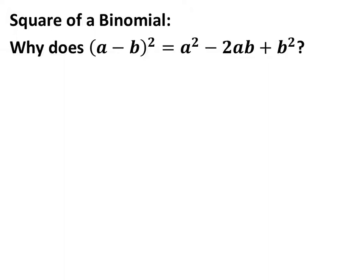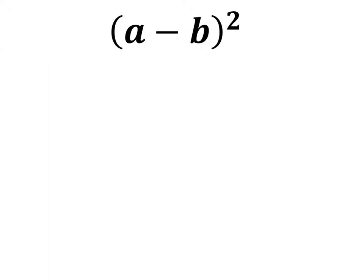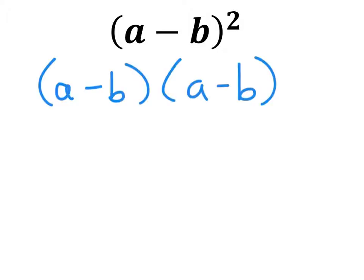Everything's going to work pretty much the same way, but instead of a plus we've got a minus right here. So let's take a look at that quantity first. This gives us the quantity a minus b, and we're going to square that quantity. The first thing I'm going to do is expand it, which gives us these two quantities now being multiplied by each other.